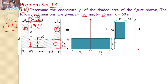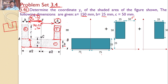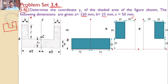This height is equal to 25, plus area 3. For area 3, the width is equal to 25, the height is equal to 50, and the distance from the y-axis is also a/2 minus b, which equals 50. This height is also equal to 25. So the given area is divided into three individual areas.